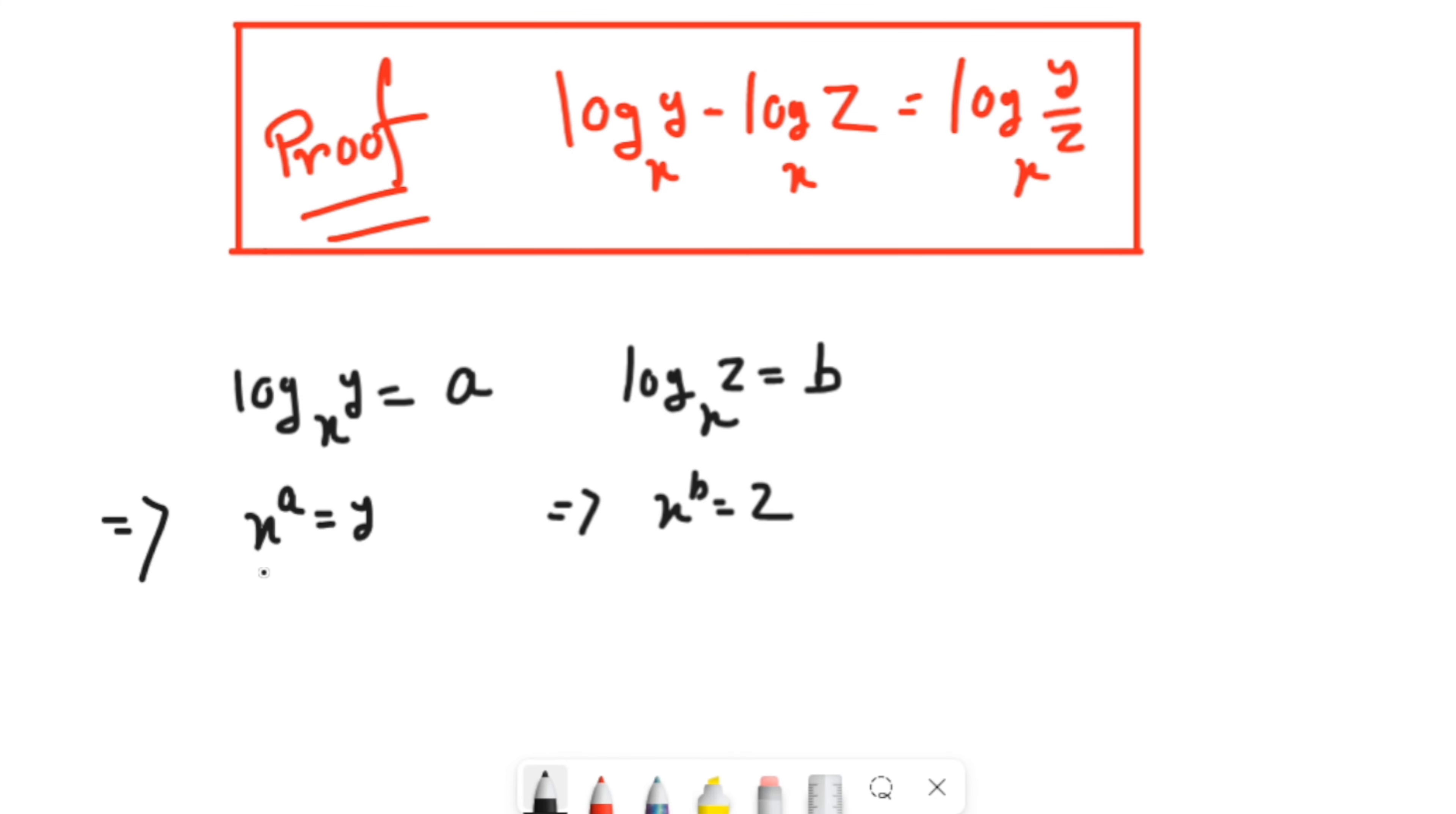Let's combine these two equations. If we write in that way, x to the power a by x to the power b, then it will be equals to y by z.